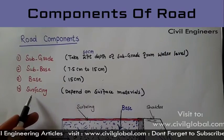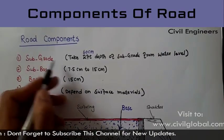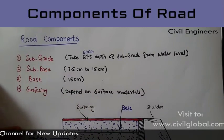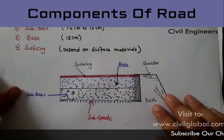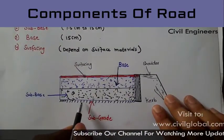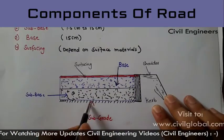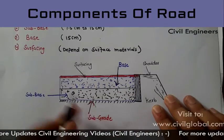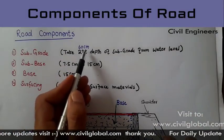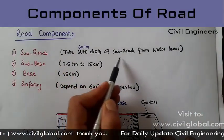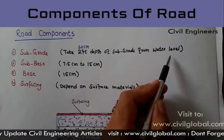The first one is sub grade. In this cross section area I will show you what is sub grade. This is the sub grade, which takes 20 feet, means 60 centimeter depth of the sub grade from water level in the road section.